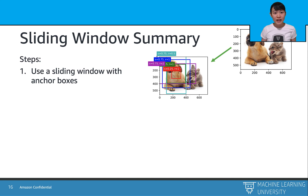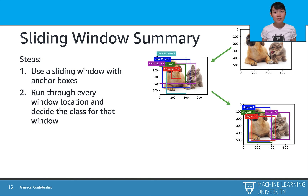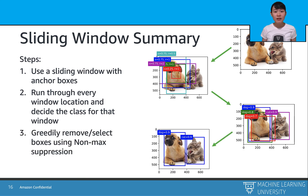Let's have a quick recap of the sliding window method. We first generate bounding boxes with different aspect ratios and different sizes — those are the anchor boxes. Then we slide these boxes through each pixel window and decide the object class for that window, removing boxes with lower probabilities. For the remaining boxes, we apply non-max suppression to remove the highly similar ones. This is the whole procedure of the sliding window method.